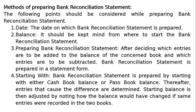The next point is starting the bank reconciliation statement. It is prepared by starting with either the cash book balance or the pass book balance. Thereafter, entries that cause the difference are determined, and the starting balance is then adjusted by noting how the balance would have changed if the same entries were recorded in both books.